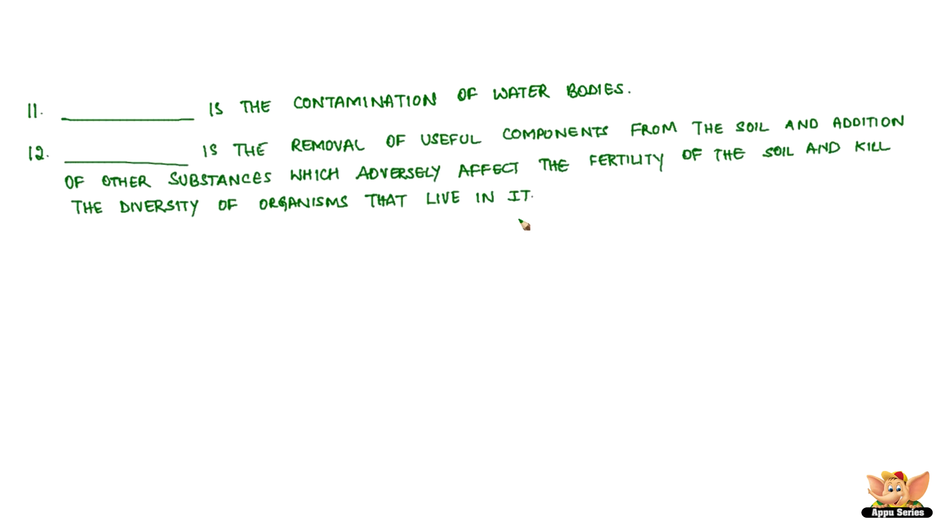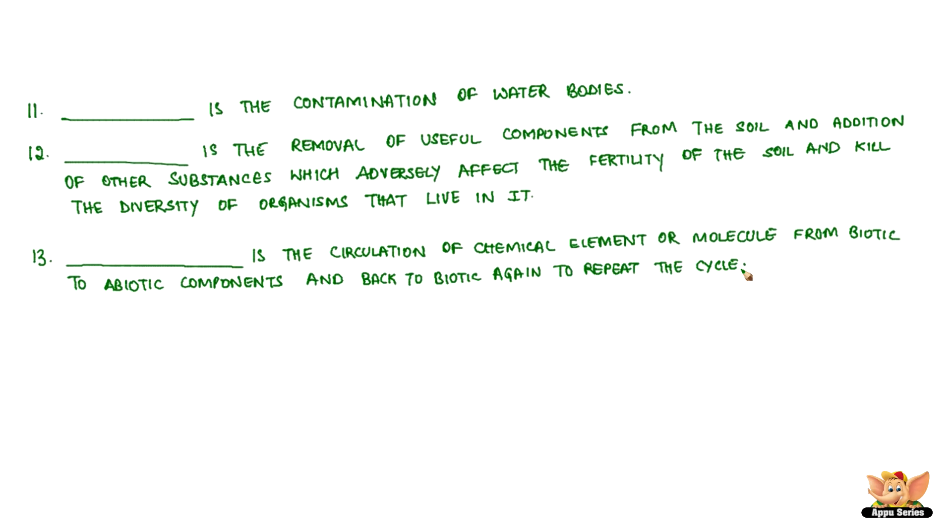Dash is the removal of useful components from the soil and addition of other substances which adversely affect the fertility of the soil and kill the diversity of organisms that live in it. Dash is the circulation of a chemical element or molecule from biotic to abiotic components and back to the biotic again to repeat the cycle.